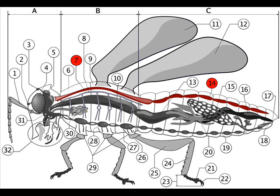The closed circulatory system is a much more efficient system. But there is more than one type of closed system, and each system is adapted to different kinds of higher invertebrates and vertebrates. With a few exceptions, in each closed system you have a heart pumping blood, and you have a system of arteries, veins, and capillaries through which the blood flows and the waste is removed.